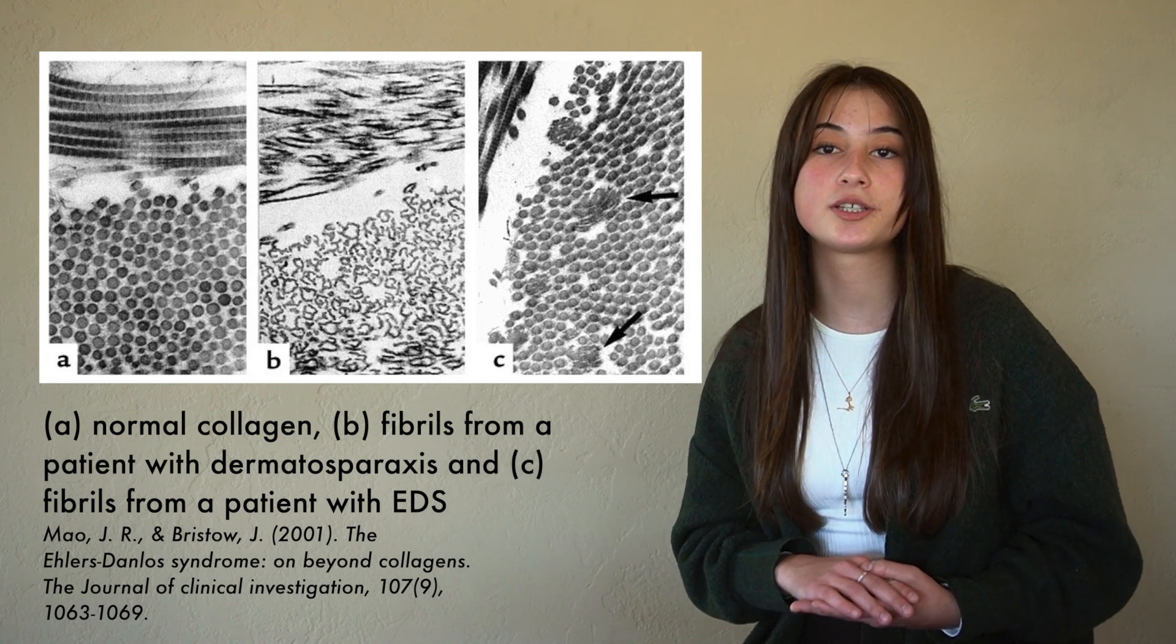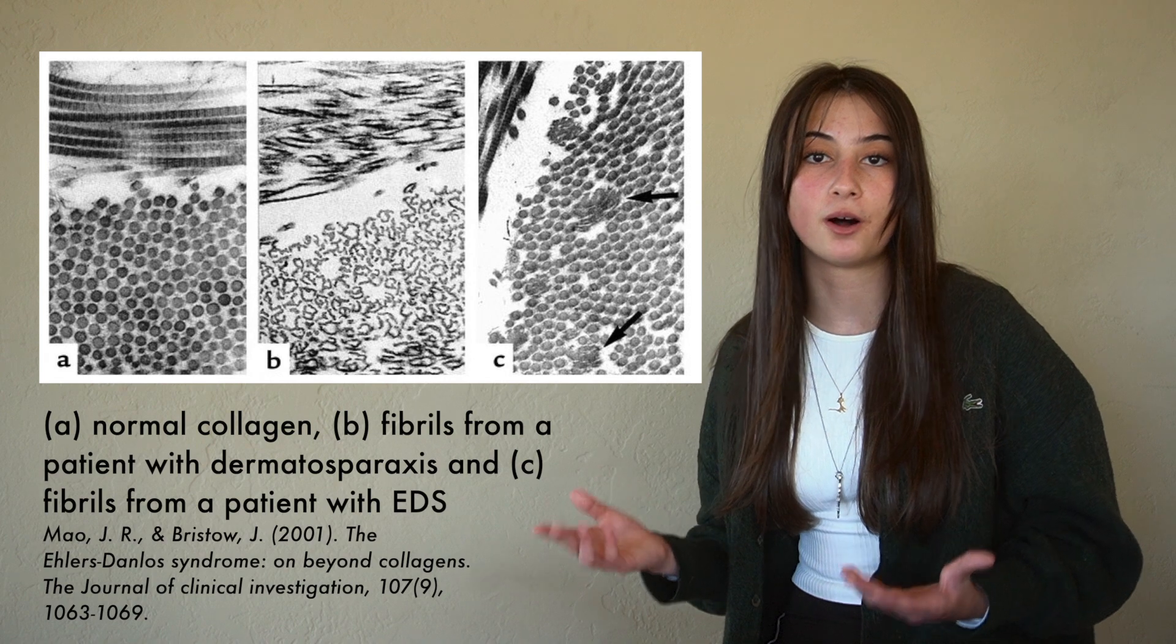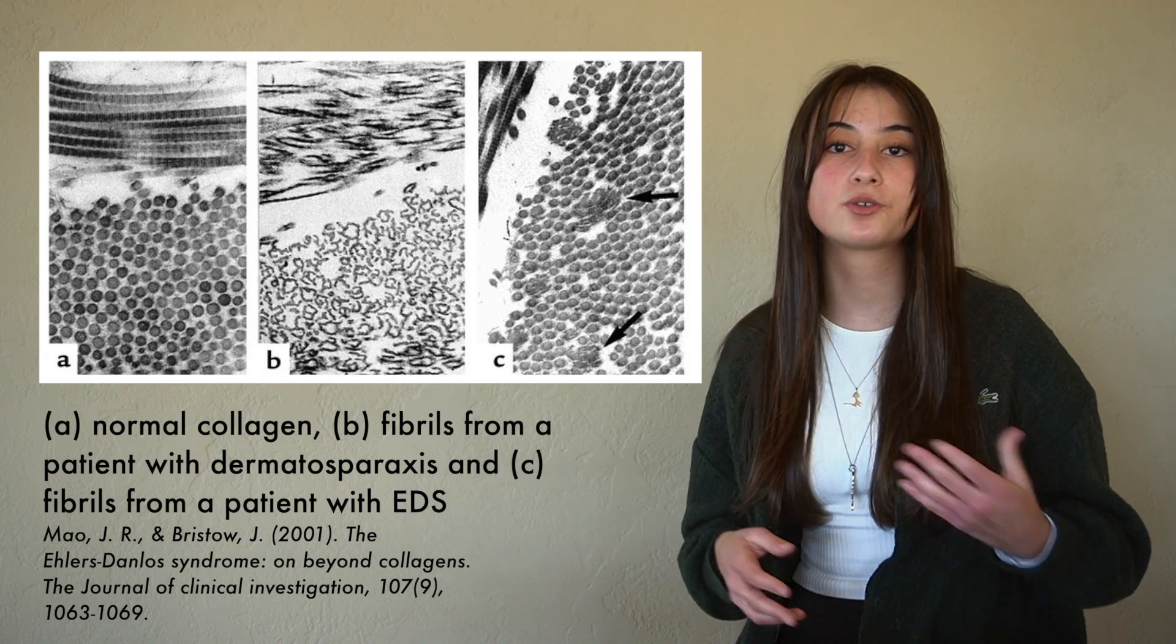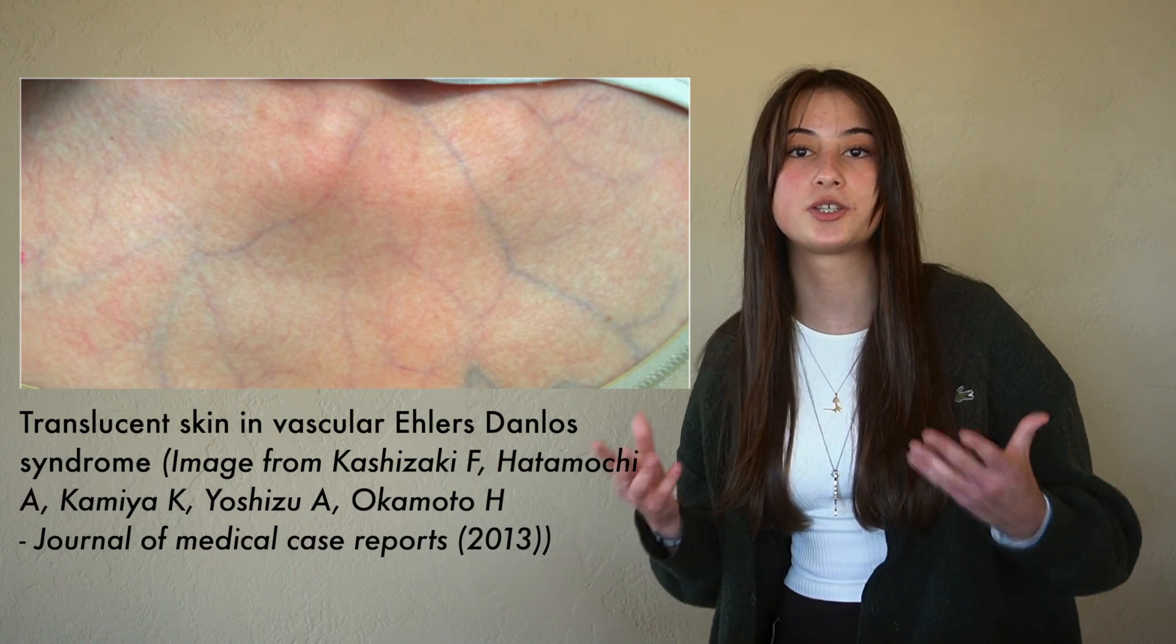However, this is not the case in EDS patients, as the spaces are uneven and much larger. These large empty spaces with no collagen explains why the skin can be so translucent and fragile in some areas. Without the collagen in some parts of the skin, you can see the veins because it's so translucent.